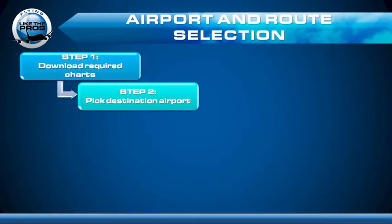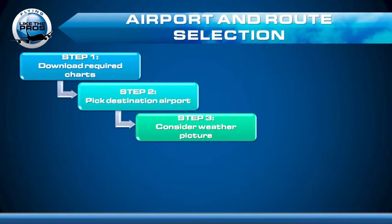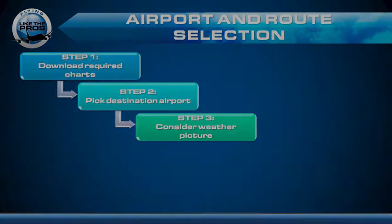Step three of our route selection is to consider the big weather picture. The main point here is to quickly get enough information to know which large areas we're going to need to avoid, and whether to take a northerly route, southerly route, easterly route, or westerly route to get us around the weather.